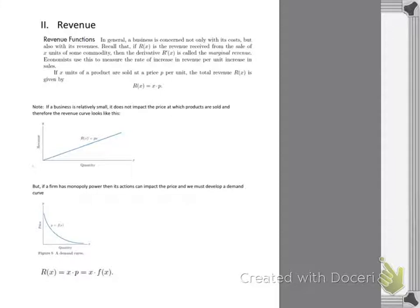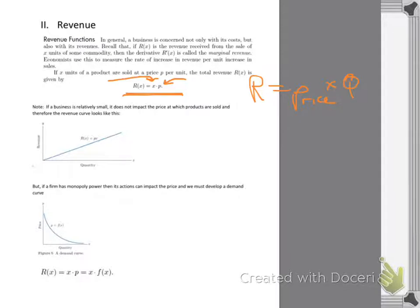Usually you have to build a revenue function. Revenue equals price — small p — times quantity sold, which is x. In economics: revenue equals price times quantity produced. Think of a lemonade stand: the more lemonade you sell at a certain price, the higher your revenue. You figure out revenue by saying price times quantity sold.